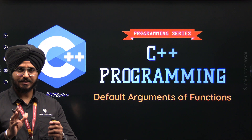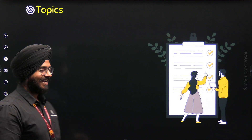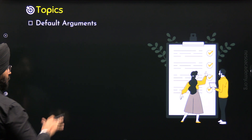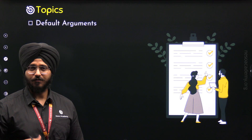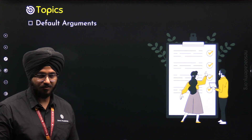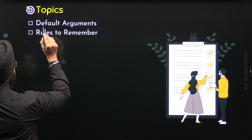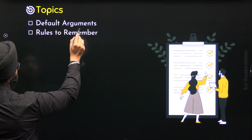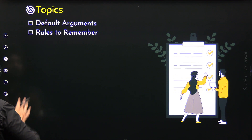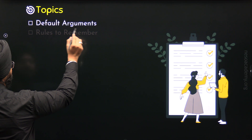So without any further delay, let's get started with this lecture and let's see what are the topics. The first topic of this lecture is default arguments. First, we will properly understand what are default arguments and how do we use them. Then we will move to the next topic to understand some rules associated with default arguments that we need to remember.